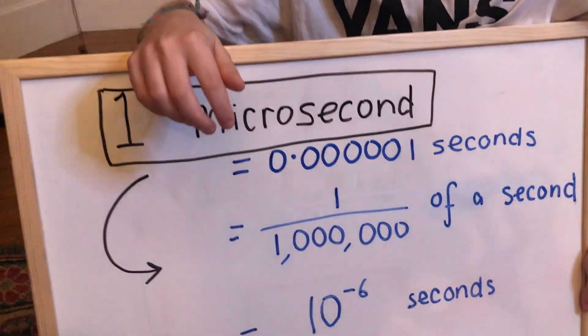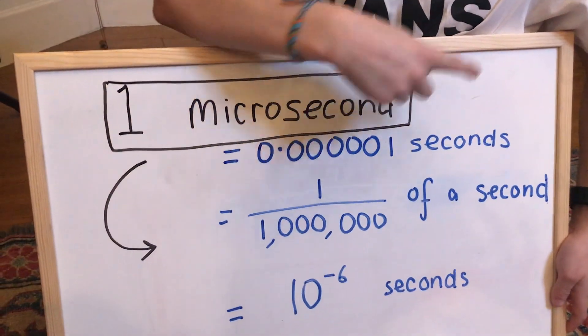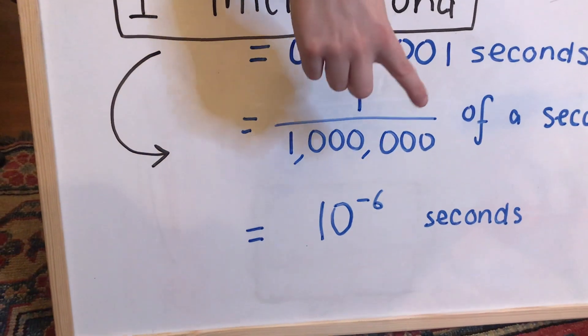A microsecond is equal to 0.0000001 seconds, 1 millionth of a second, or 10 to the minus 6 seconds.